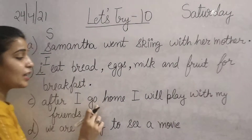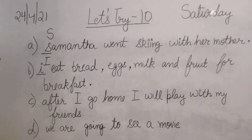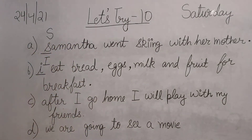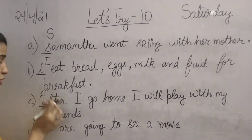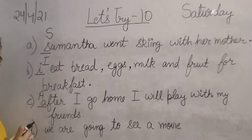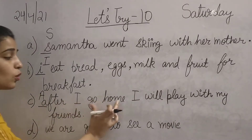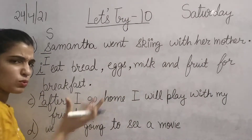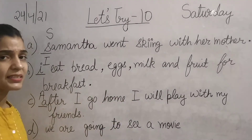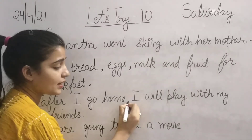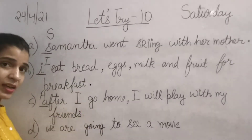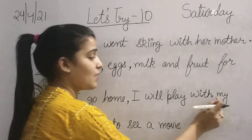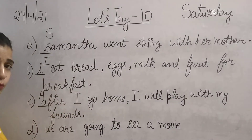The next sentence is: 'After I go home, I will play with my friends.' — Apne ghar jane ke baad, main apne doston ke saath kheloonga. After ka A should be capital. 'After I go home' is not a complete sentence on its own, so we place a comma after 'home'. Then: 'I will play with my friends.' And at the end, put a full stop.